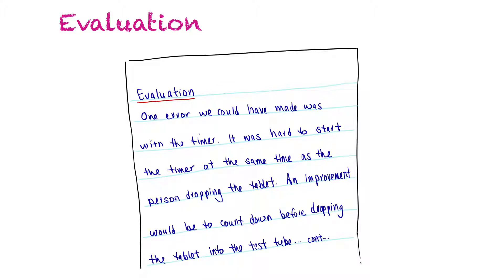The evaluation section involves evaluating your procedure — were there errors that could have affected your results? For example, one error could be with the timer: it was hard to start the timer at the same time as the person dropping the tablet. An improvement would be to count down before dropping the tablet so that the tablet and the timer start at the same time. That's an example of an evaluation of one of the errors in the lab.